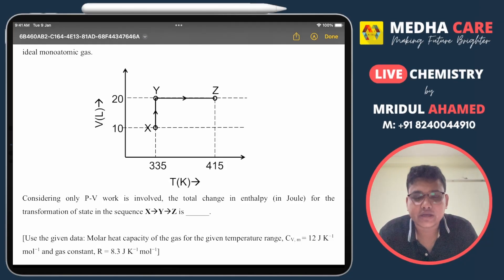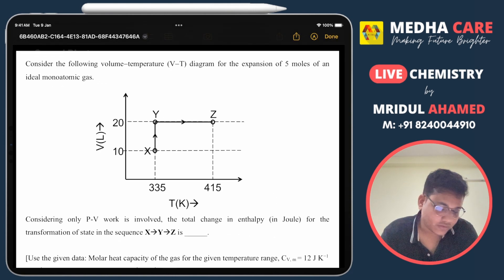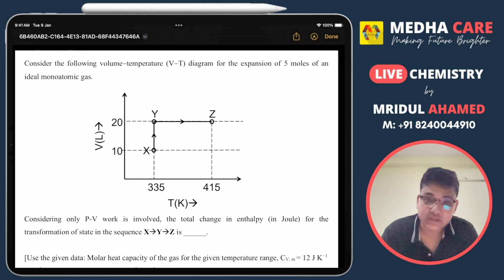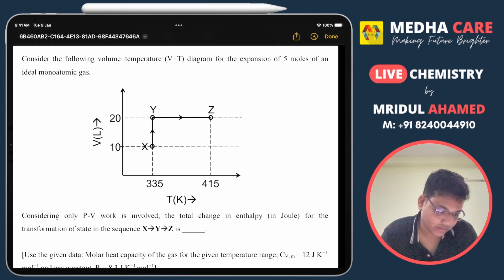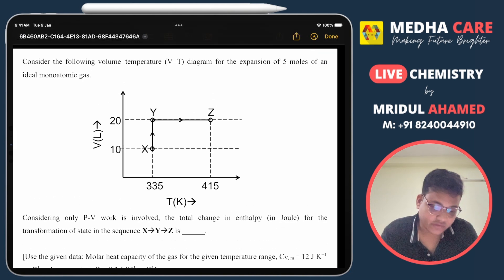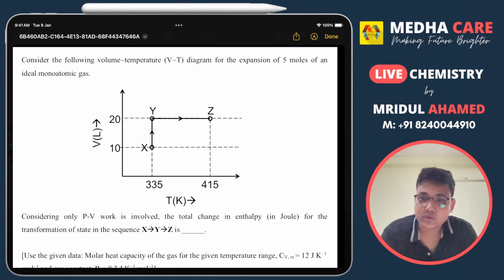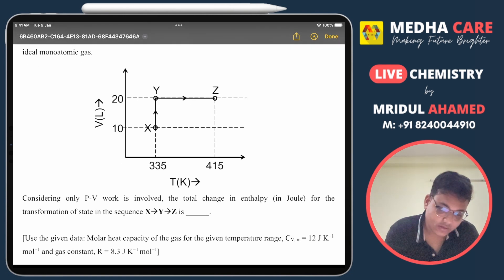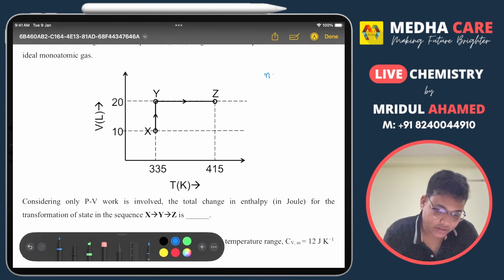Hello everyone, welcome to Medha Care. In this video we'll discuss this question from JEE Advanced 2024 Paper 1. In this question we have one VT curve, and it is given that total 5 moles of ideal monatomic gas was taken. So here data given: n is 5 moles, and you have to calculate the enthalpy change for this process X to Y to Z.